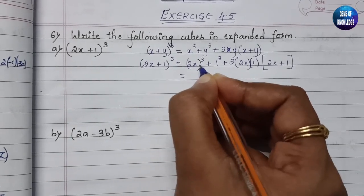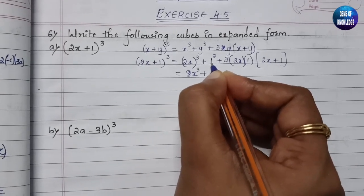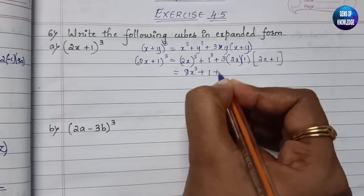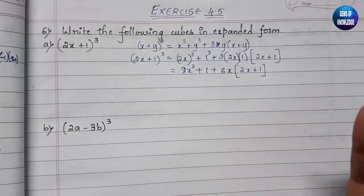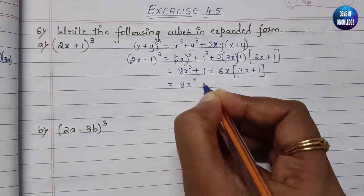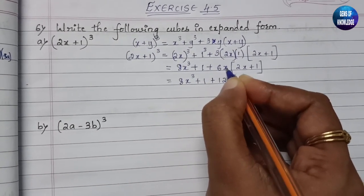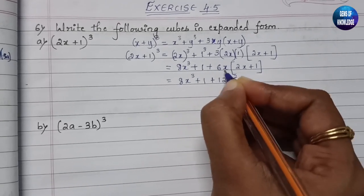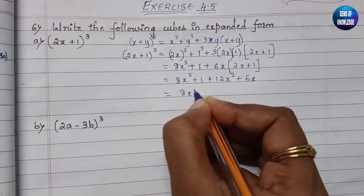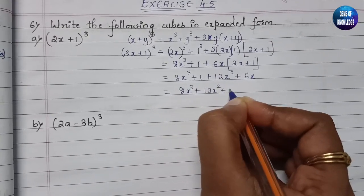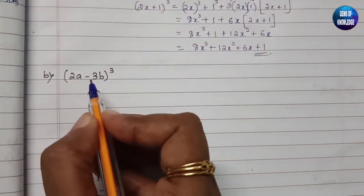Now, 2³ = 8, so (2x)³ = 8x³. 1³ = 1. Then 3 × 2x × 1 = 6x, multiplied by (2x + 1) gives 12x² + 6x. So the final expanded form is 8x³ + 12x² + 6x + 1.